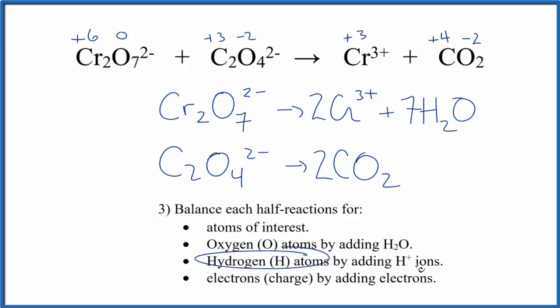Next, we balance the hydrogen atoms by adding H+. So this is happening in acidic medium. That means there's some H+ ions available. So we need to add 14 of these hydrogen ions over here. That'll balance out the hydrogens. Down here there's no hydrogens. We're all good.